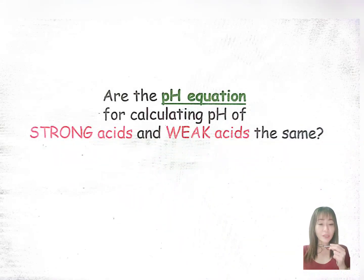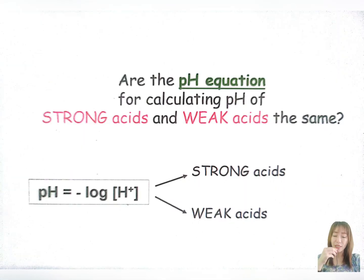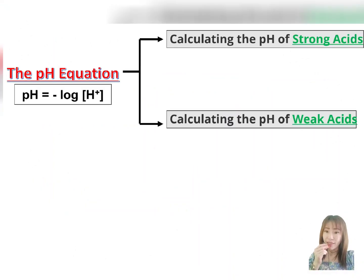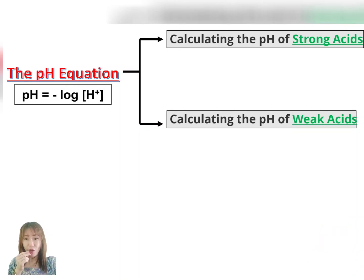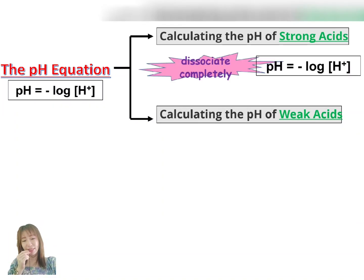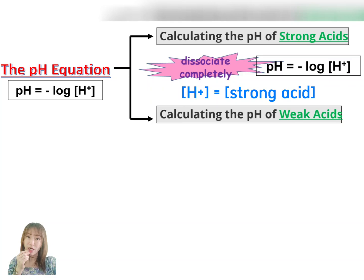My dear students, an acid dissociates and releases hydronium or hydrogen ions in the aqueous state. But dissociation differs according to the acid. We use the same pH expressions to determine the pH value of both strong acid and weak acid. For strong acid, practically 100% of the acid is dissociated. Therefore, the concentration of hydrogen ions is equal to the acid concentration.